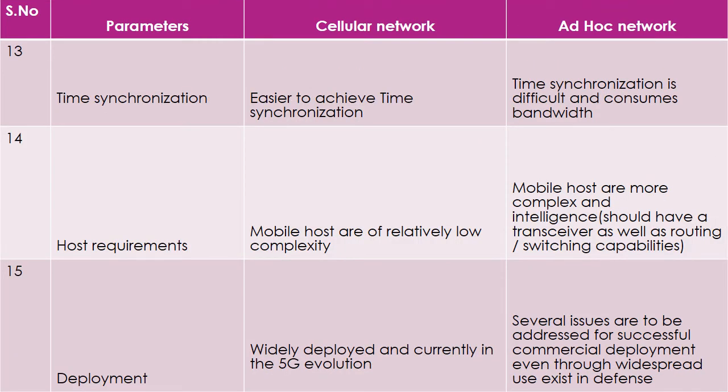Time synchronization is easy to achieve in cellular network, but difficult and bandwidth-consuming in ad hoc network. Regarding host requirements: mobile hosts are relatively less complex in cellular network because the base station and mobile switching center handle call establishment. In ad hoc network, such infrastructure is not available, so mobile hosts are more complex and must have transceiver, routing, and switching capabilities.